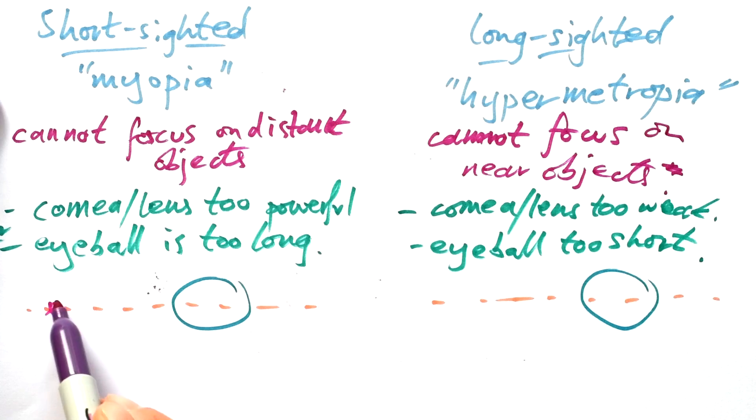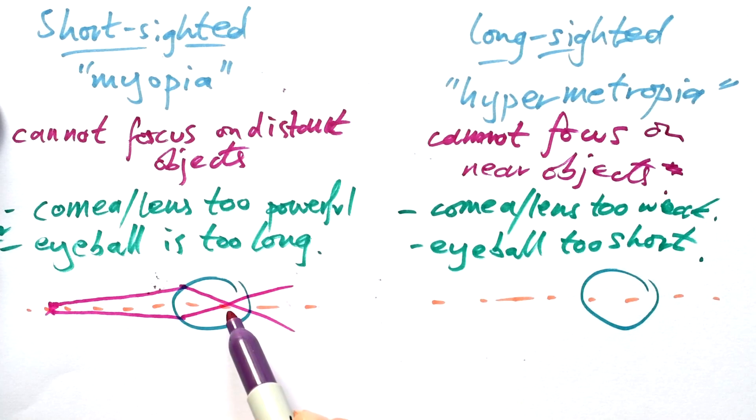So let's have a look what's going on with the light rays then. So if you're short-sighted and the object's fairly far away here, that means that your eyeball is focusing, but they're focusing at this point here. And as you can see, that is not at the back of the eyeball. That's not at the retina. So you won't see a clear image. Your image will be fuzzy.